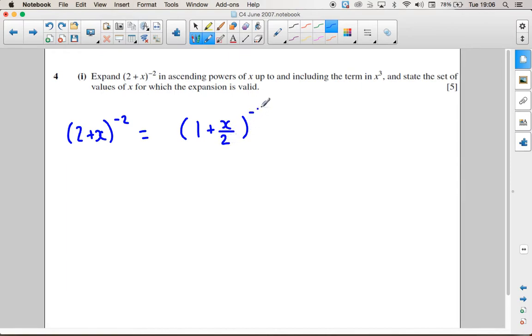But we're not really dividing by 2. We're dividing by 2 to the power of minus 2. So when I divide by 2 to the minus 2, that 2 to the minus 2 needs to come outside the bracket. And 2 to the minus 2 is 1 over 4. So that is now what we're going to expand: 1 plus x over 2 to the minus 2.